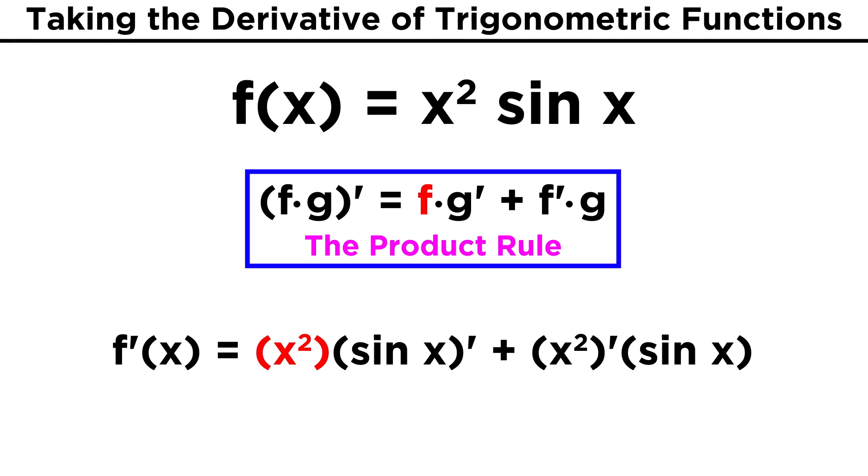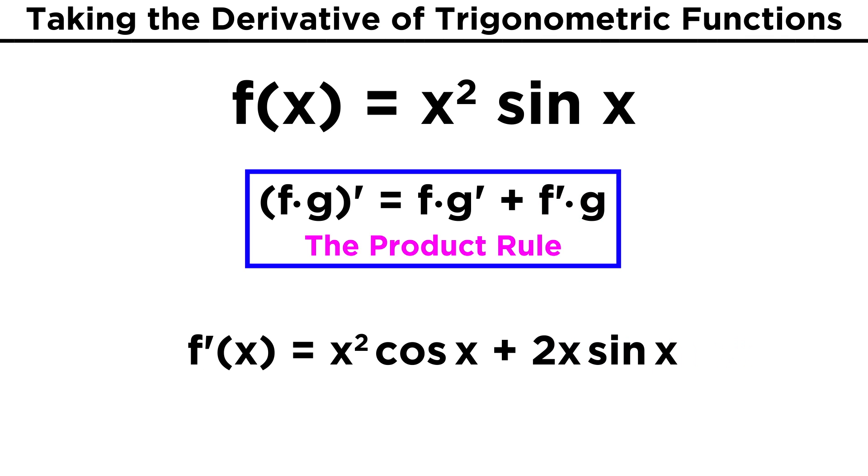So for the first term, let's leave x squared as it is, but turn sine x into cosine x, since cosine is the derivative of sine. Then for the second term, let's turn x squared into two x, and leave sine x as it is. That will give us x squared cosine x plus two x sine x. And there isn't anything more that can be done, so this is all we need.